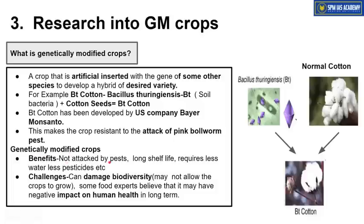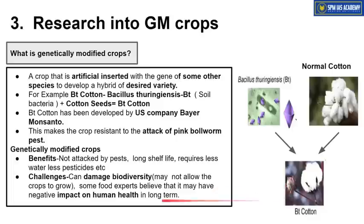Genetically modified crops have many advantages: they are not easily attacked by pests, they have a long shelf life, and they require less water and fewer pesticides. However, they also have certain challenges. The biggest challenge is that genetically modified crops may damage biodiversity. This means that in areas where GM crops are grown, other normal crops will gradually disappear. Another concern is the negative impact of GM crops on human health.